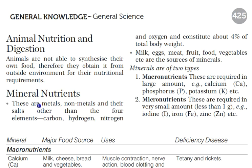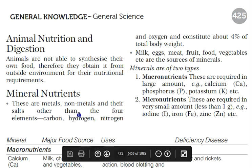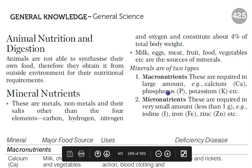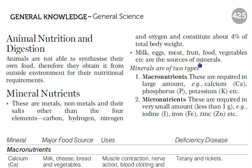Now come to mineral nutrients. These are metals, non-metals, and salts — other than the four core elements carbon, hydrogen, nitrogen, and oxygen. In our body we need metals, non-metals, and salts, and they constitute about 4% of body weight.